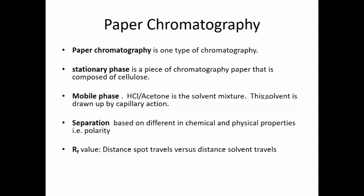The mobile phase for this paper chromatography experiment is a hydrochloric acid and acetone mixture, drawn up the chromatography paper by capillary action. When a compound is spotted on the paper, the solvent drags that compound up with it. Separation is based on different chemical and physical properties — sometimes polarity, sometimes hydrogen bonding — depending on the compound being separated. We'll also calculate the RF value: the distance the spot traveled divided by the distance the solvent traveled, giving the retardation factor.